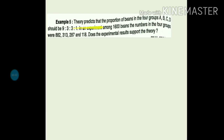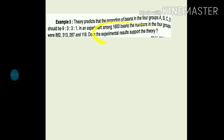Let us see one more question. Theory predicts that the proportion of beans in four groups A, B, C, and D should be in the ratio 9:3:3:1. In an experiment among 1600 beans, the numbers in the four groups were 882, 313, 287, and 118. Does the experimental result support the theory? We simply need to answer this. Experimental result is the bean quantities given; the theory says it should be in this ratio.